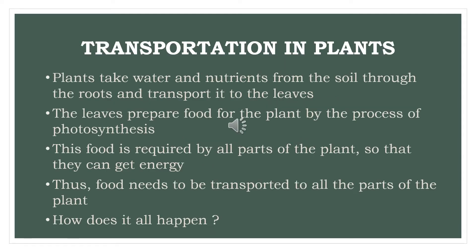Transportation in Plants: Plants take water and nutrients from the soil through the roots and transport it to the leaves. The leaves prepare food for the plant by the process of photosynthesis. This food is required by all the parts of the plant so that they can get energy.